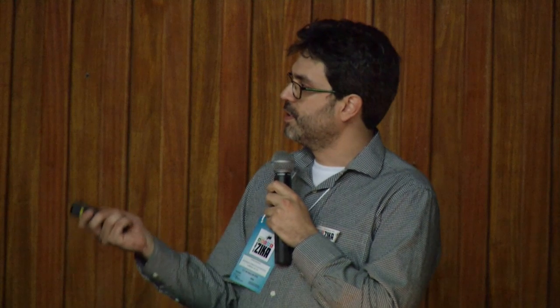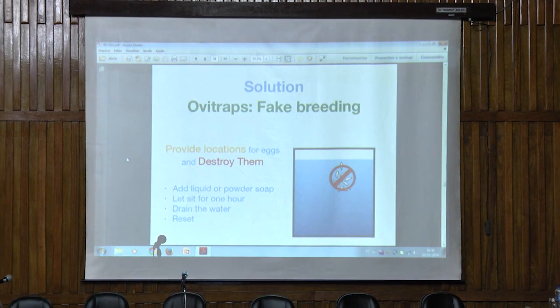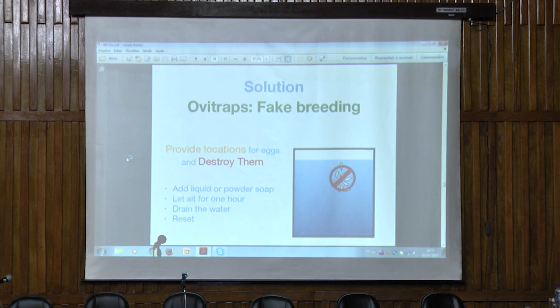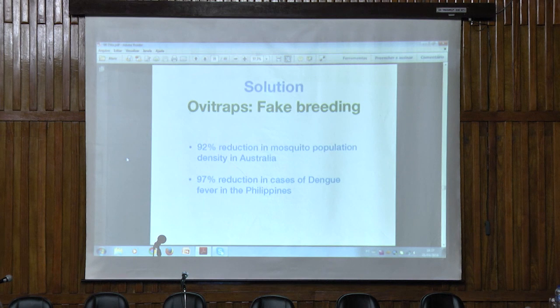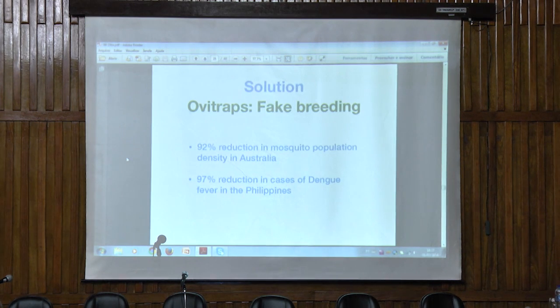The idea is to compete with stagnated water. We can use any container; clean water is not needed. The idea is to facilitate landing so it's inviting for the mosquitoes to lay their eggs. To destroy them, add liquid or powder soap, let it sit for an hour or so to be sure the eggs are dead, then drain the water and reset the traps. This has had a high efficacy reducing mosquito population and density, and the cases of dengue in many countries like Australia and the Philippines.